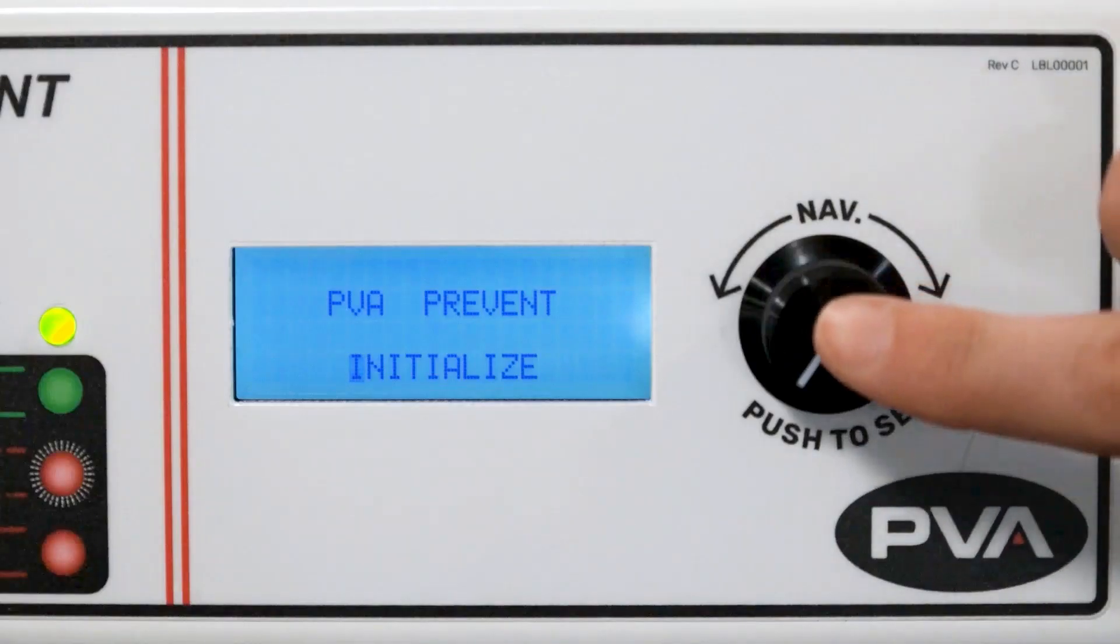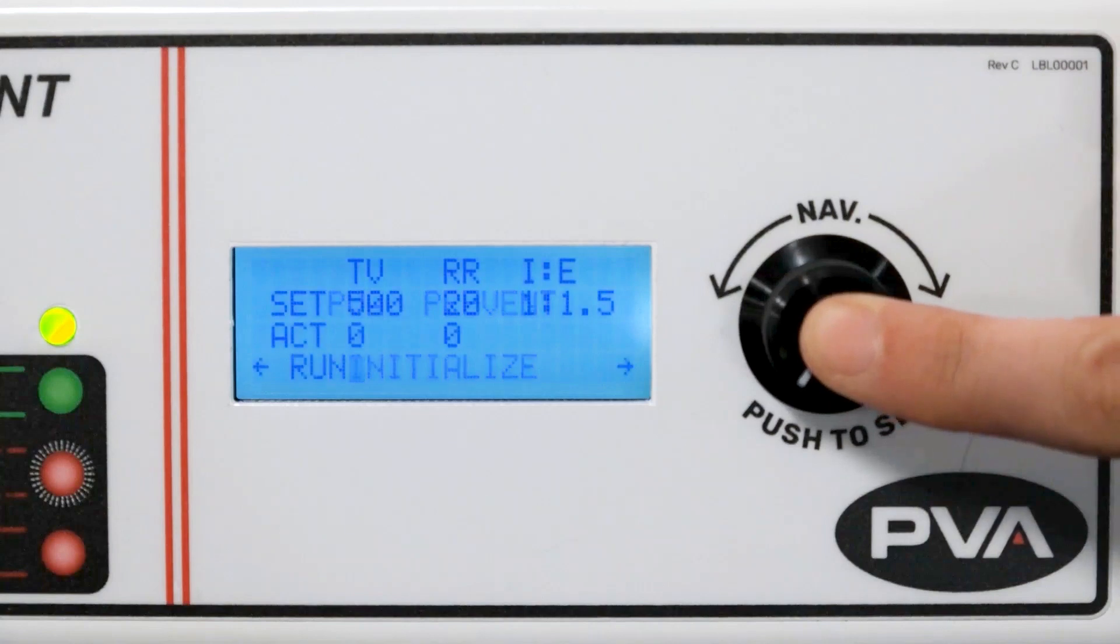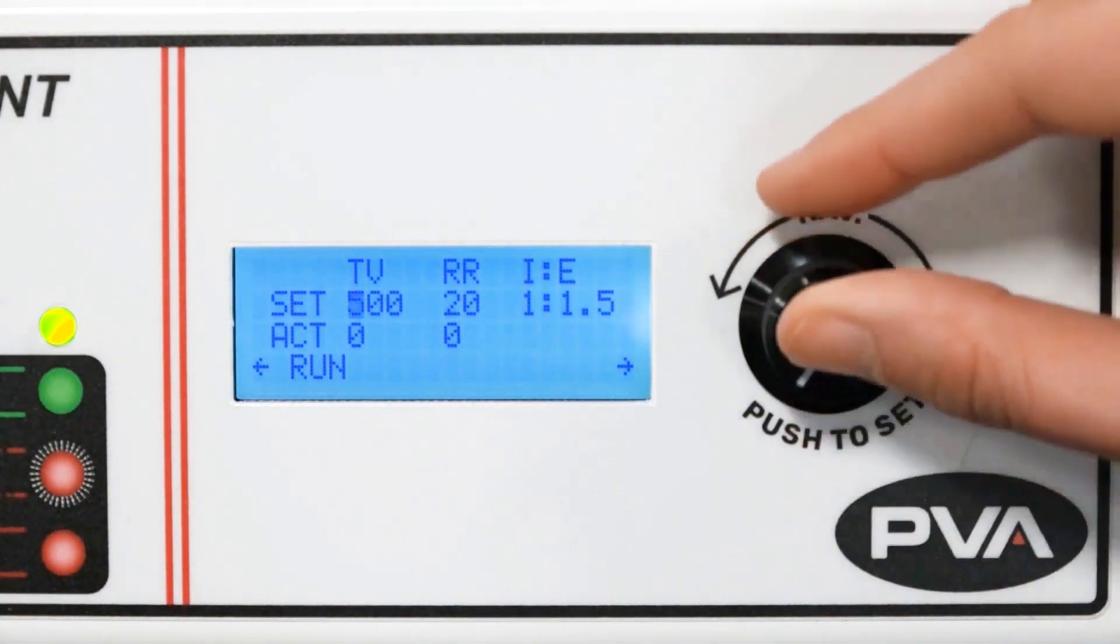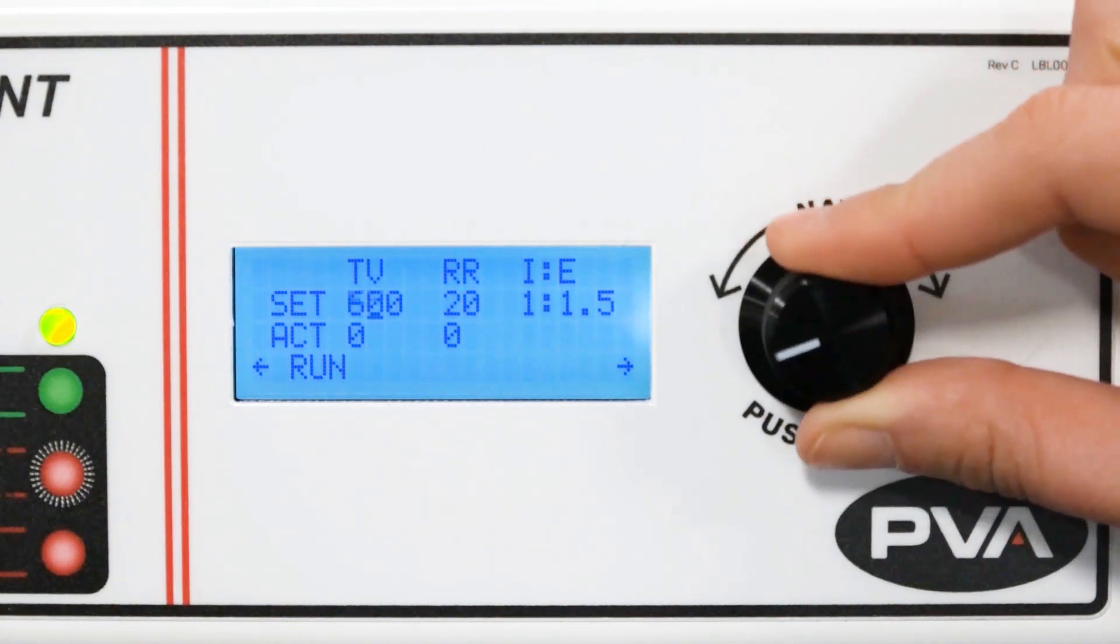Press the knob to select initialize on the startup screen. You will automatically advance to the next screen. On this screen, you will set your tidal volume, respiratory rate, and inspiratory to expiratory ratio.